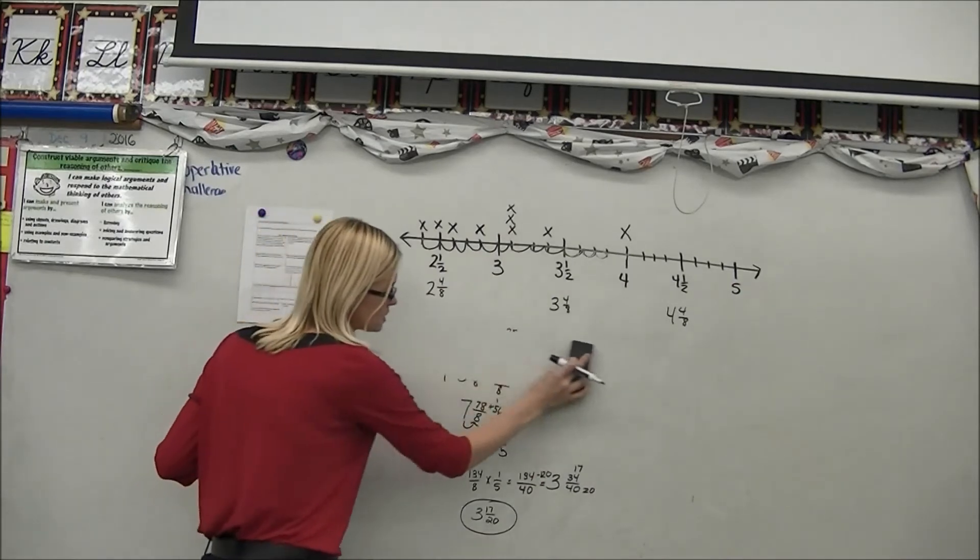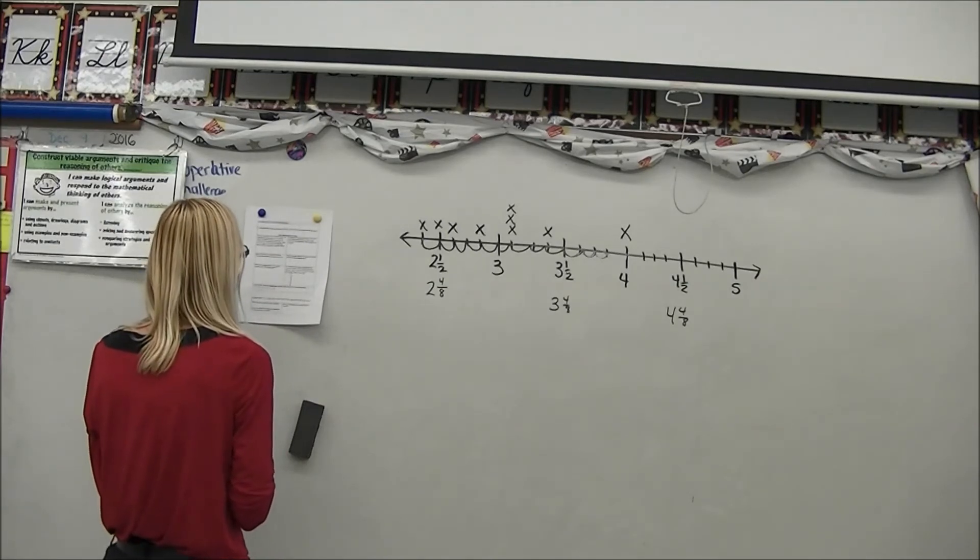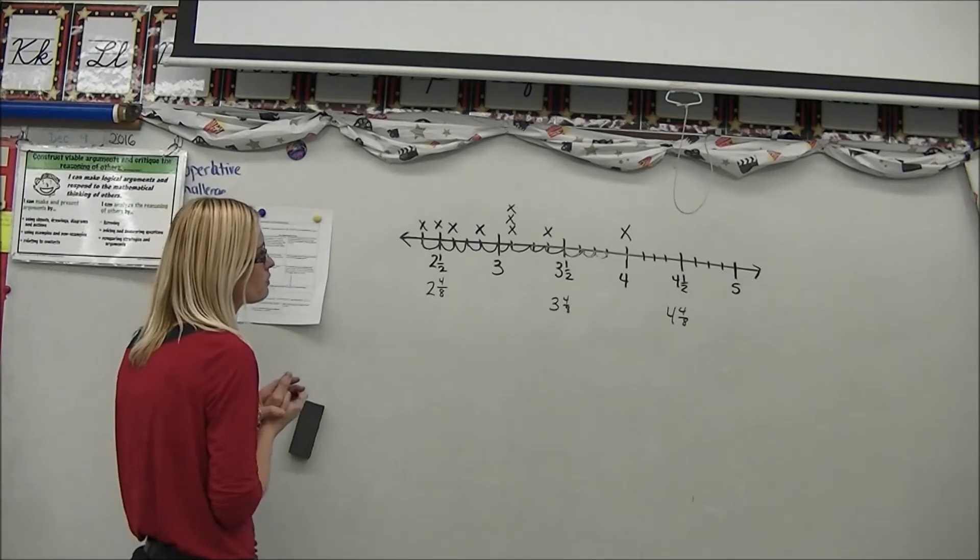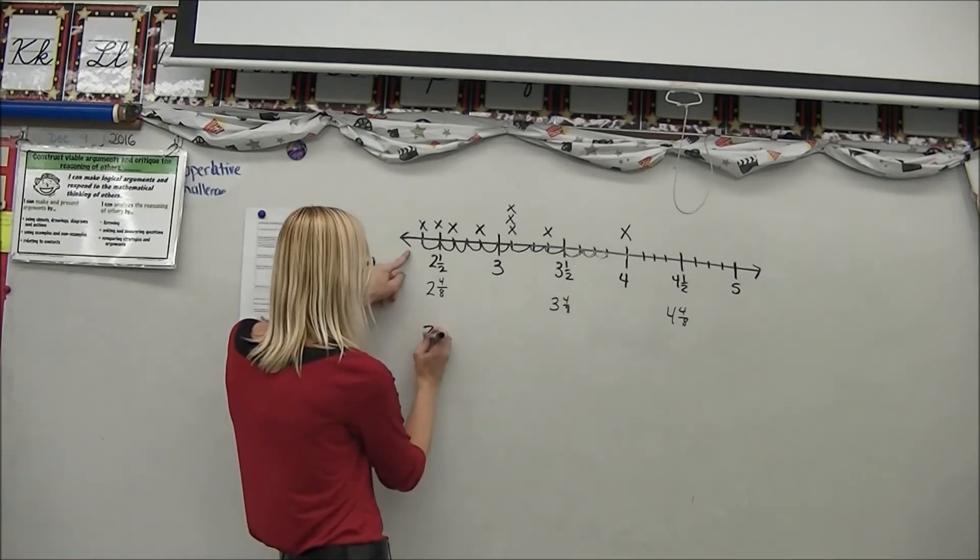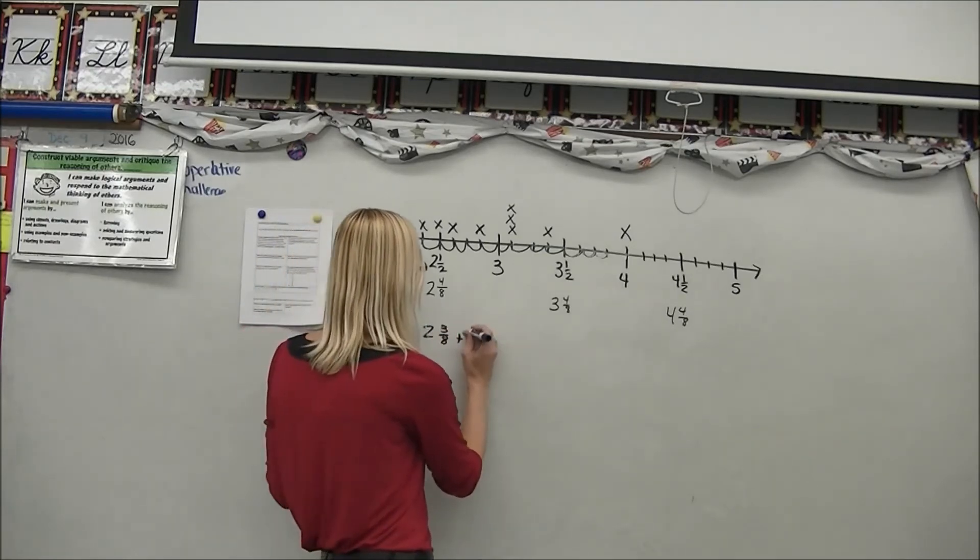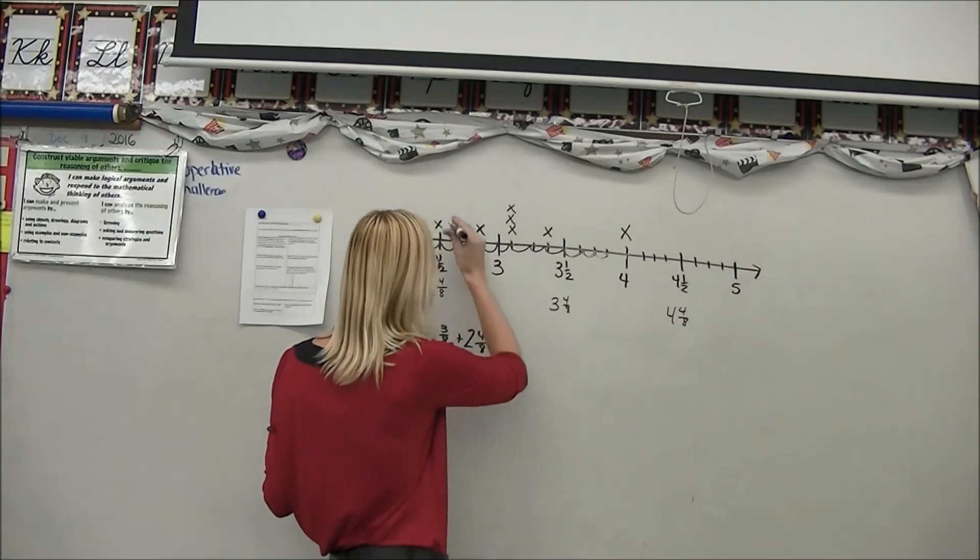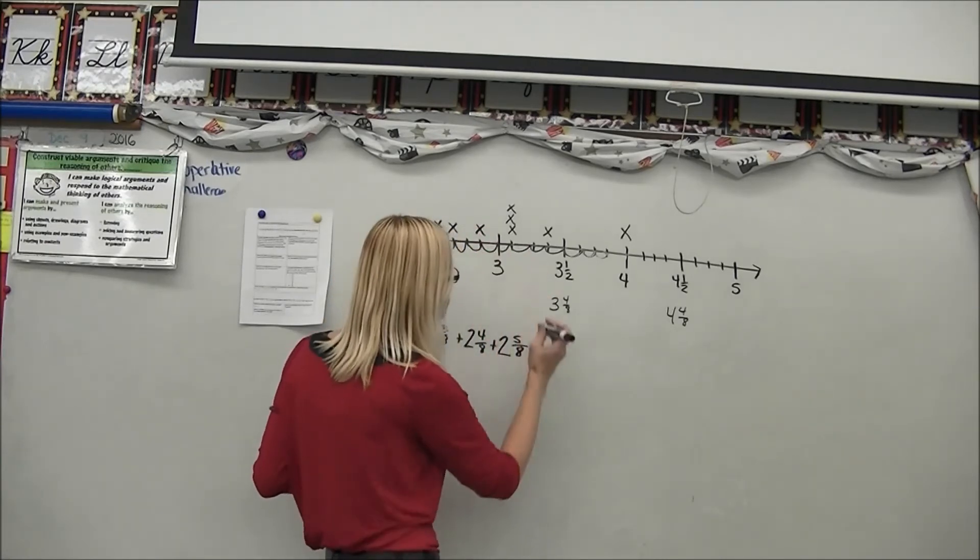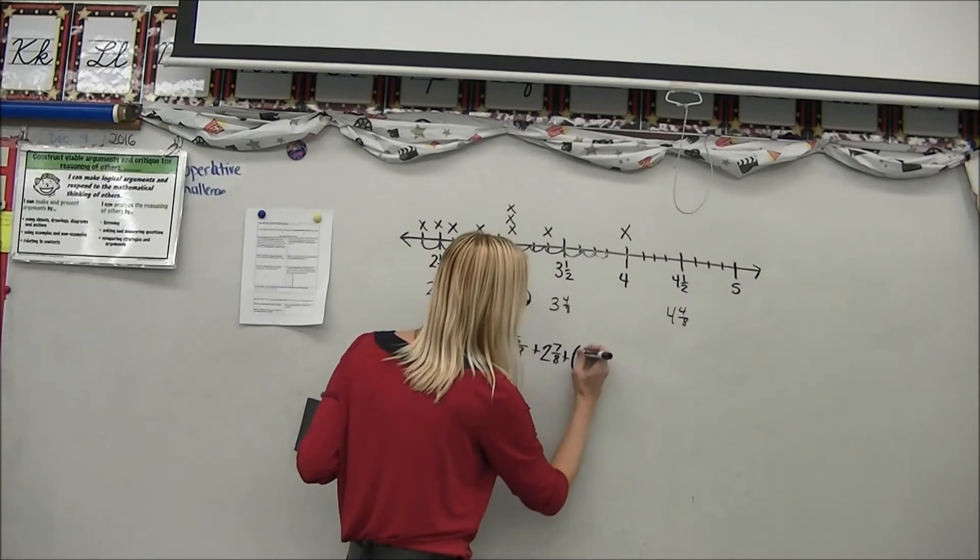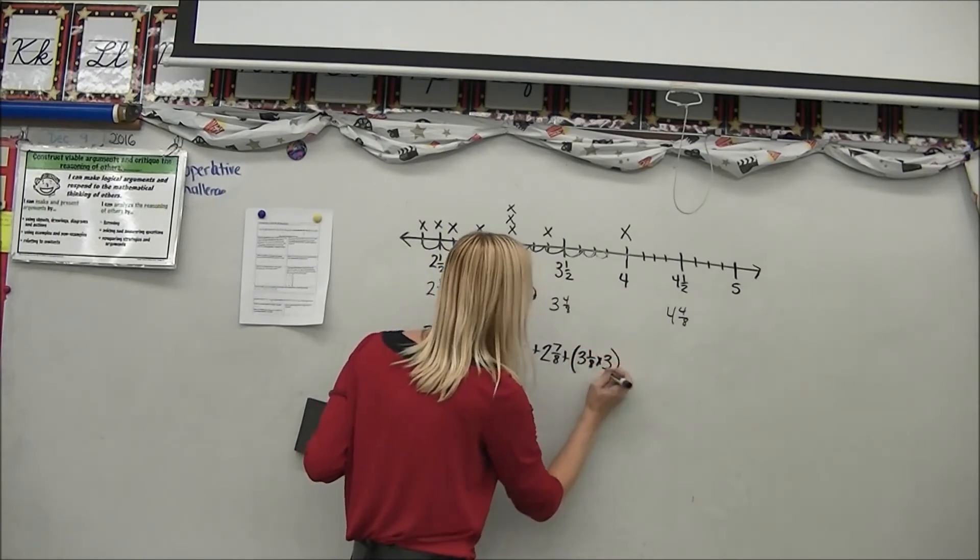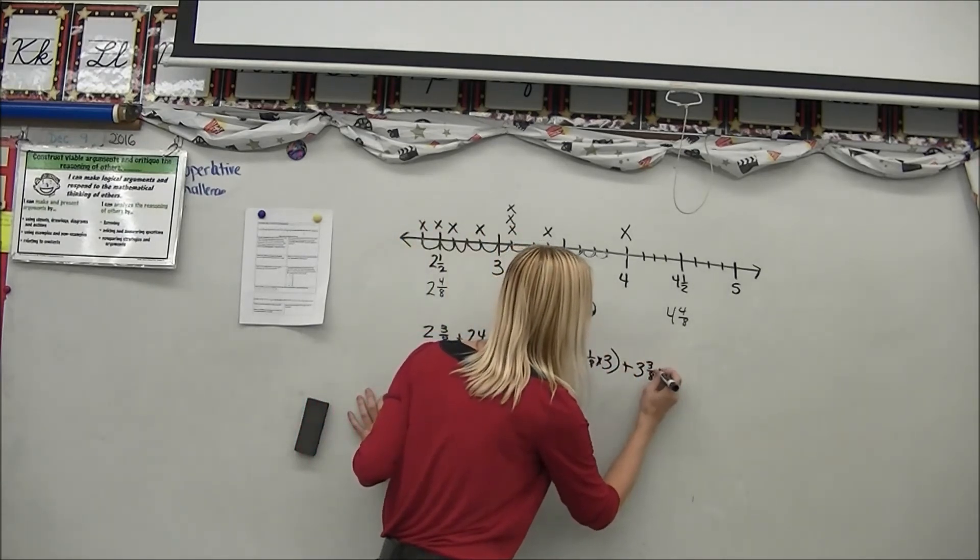Now let's look at the next one. The next one says, what is the total amount of time spent practicing over the entire 10 week period? Okay, so now I'm just going to go and I'm going to add up all my dotted points. So I have 2 and 3 eighths plus 2 and 4 eighths plus 2 and 5 eighths right there plus 2 and 7 eighths. And now I'm moving on to 3 whole. So I have 3 and 1 eighth times 3 plus 3 and 3 eighths plus 4 whole.